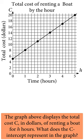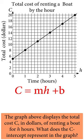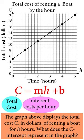The graph of the line can be represented in the form y = mx + b, or in this case, c = mh + b, where c is the total cost, mh is the rate the rent cost per hour, and b is the c-intercept, which must be the initial cost of running a boat.